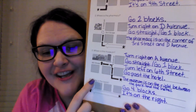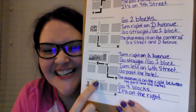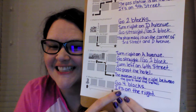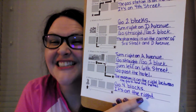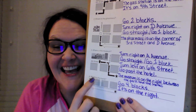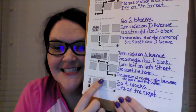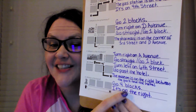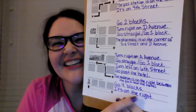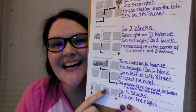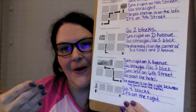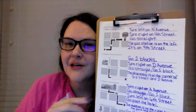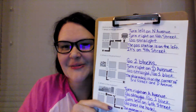Good. Last one, number four. Where is the bank? That one's so easy. Again, where is the bank? Good. Okay, guys, this time you ask the questions. I will say the directions. We're going to do it two times. Ready?